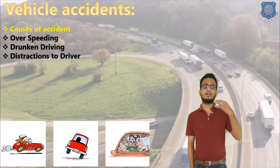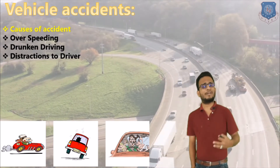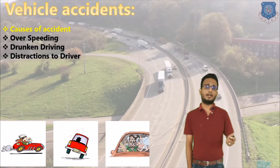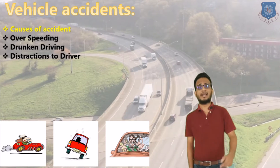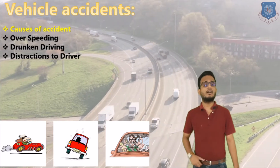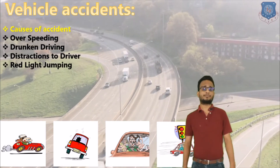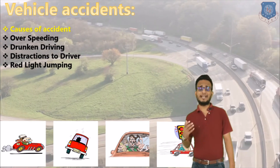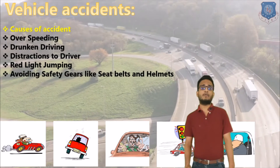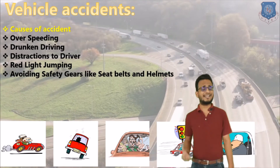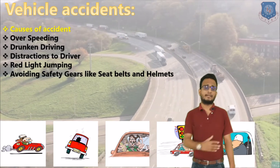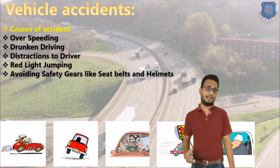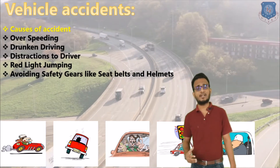There are many types of driver distraction — using mobile phones, engaging in other activities while driving, looking at hoardings, and looking around at other vehicles. The fourth cause is red light jumping. Never cross red lights, as there are high chances of accidents. Also, avoid neglecting safety gears like seat belts, helmets, vehicle lights, and airbags.